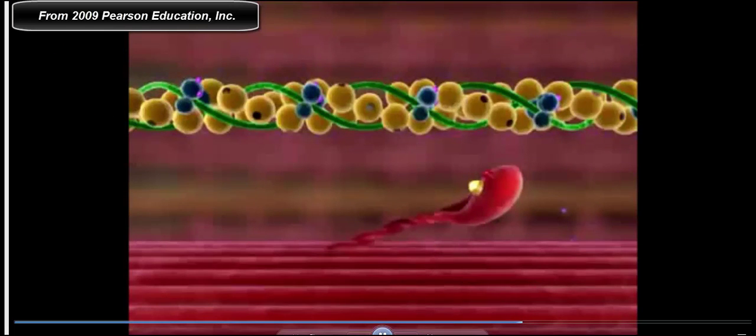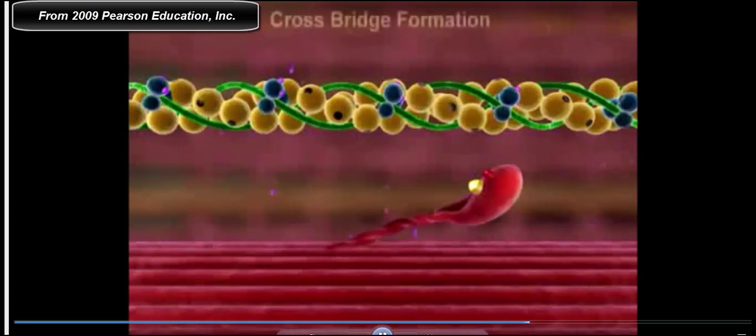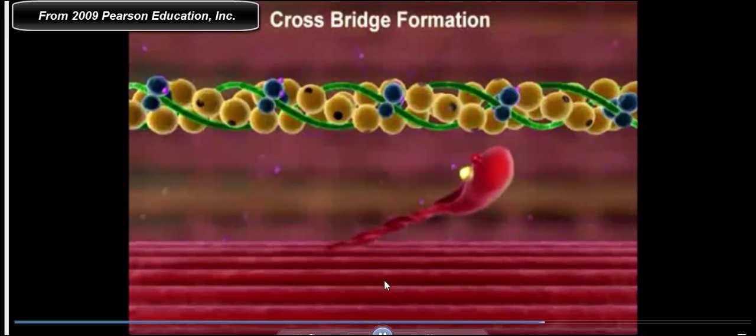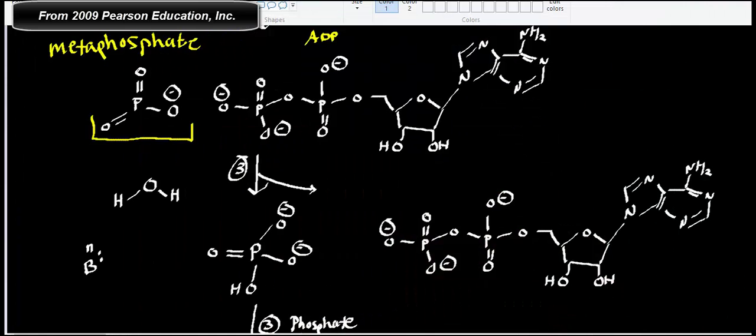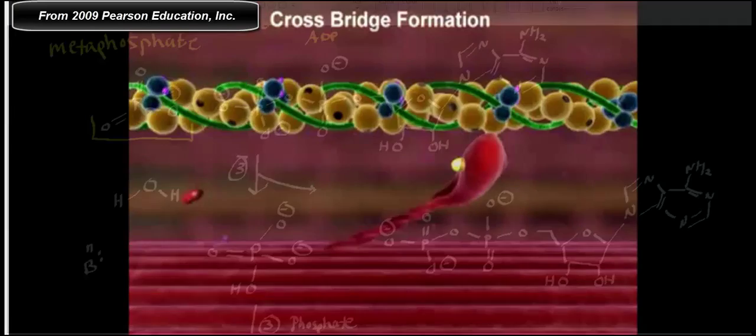What's going to happen now is you're going to get cross-bridge formation. The myosin will spontaneously attach to the myosin binding site on actin. Now we get what they call phosphate dissociation. That molecule right there that's dissociating is called phosphate, but that molecule that's dissociating, that's orthophosphate.